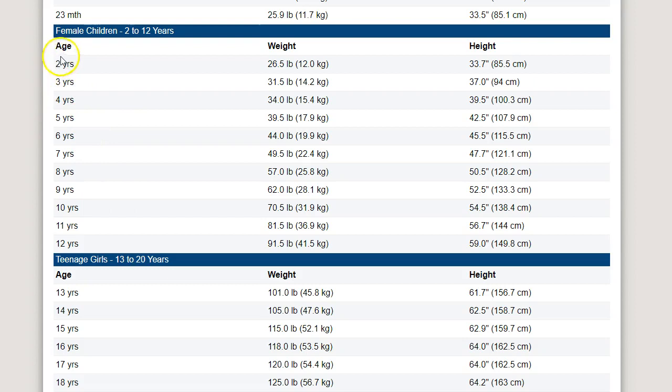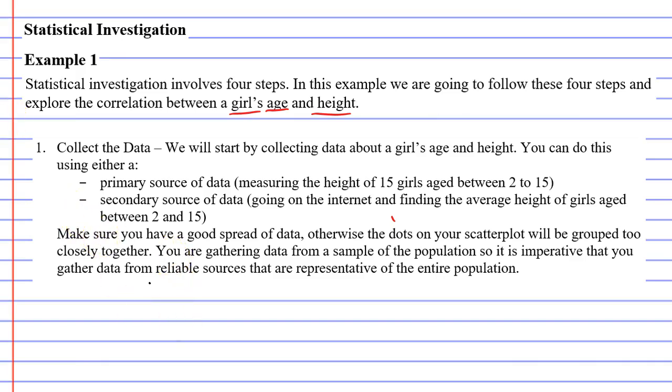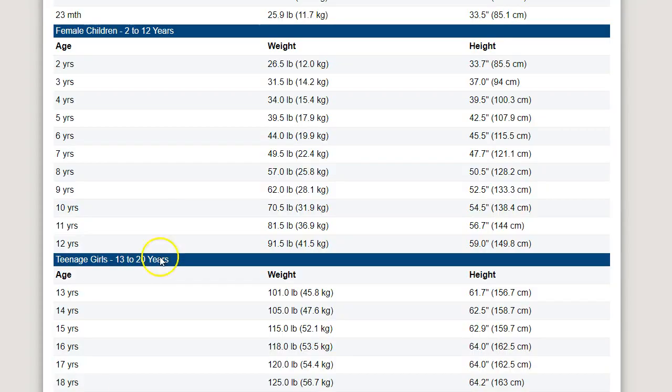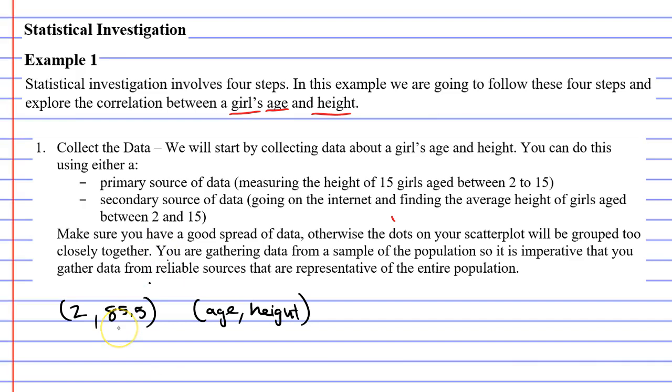All right, so we need to record this data. We found that if a girl is 2 years old, her height is 85.5 centimeters, so we'll record that down. A 2-year-old has an average height of 85.5 centimeters, like so. You'll notice when we put it in our set of brackets, we have age first and height second. So I could do that again for a 3-year-old. They have a height of 94 on average, so I'll write that next, 3,94.